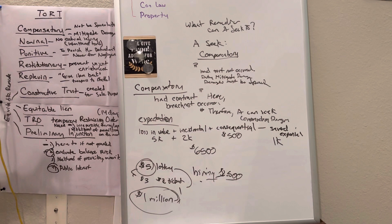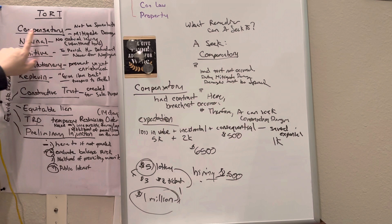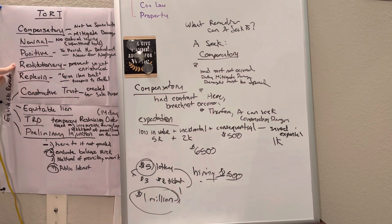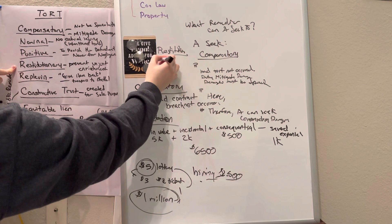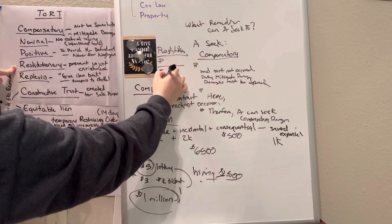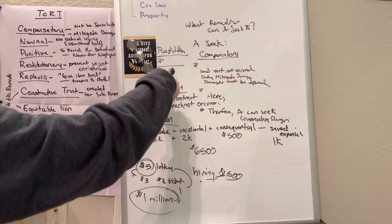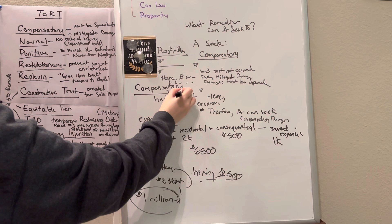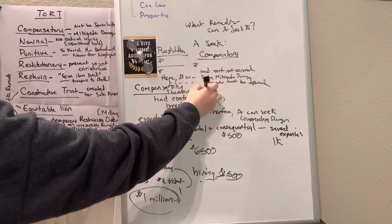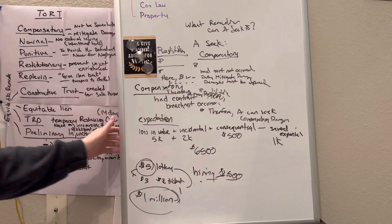This is a negligence case. Would we get nominal damages? No, those are typically for intentional torts. Would we get punitive damages? No, those are never for negligence. Would we get restitutionary? Look at the facts of the case. If you think possibly, put your title restitutionary, underline, rule statement of what restitution is, space, analysis: here, was the person unjustly enriched? Here, B was unjustly enriched and received blah blah blah. Therefore, A may seek restitution. And that is how you get full points on your essays.